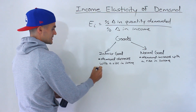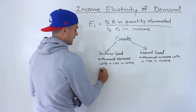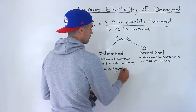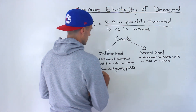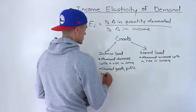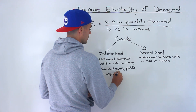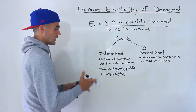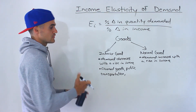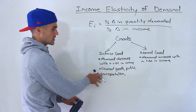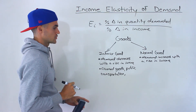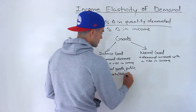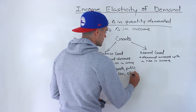Examples of inferior goods are canned goods, public transportation, and cheap motels. If income starts rising, you may get your own car and not take public transportation. Though in a very large metropolitan city, even if your income rises it may still be worth it to take public transportation. But in general, public transportation is considered an inferior good.